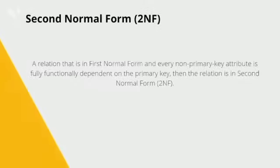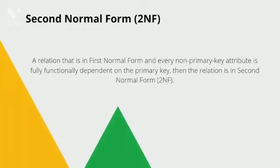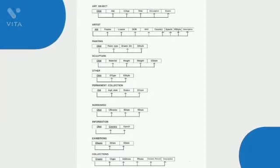Next is Second Normal Form. 2NF says that the relation should be in 1NF and every non-primary key attribute must be fully functionally dependent on the primary key. As we can see in our schema, all non-primary attributes are fully dependent on the primary key, so it is also in Second Normal Form.